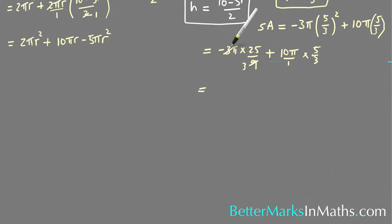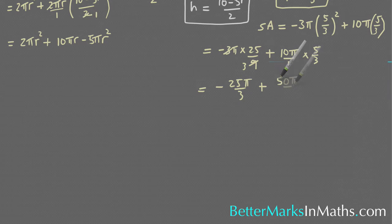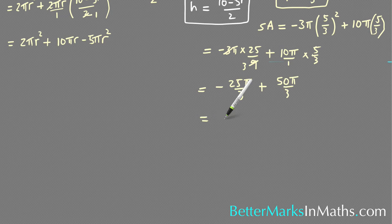So 3 cancels into that to become -π and into that to become 3, so -25π/3. And then this is 50π/3, multiplying the tops together and the bottoms together. And then that equals 25π/3.